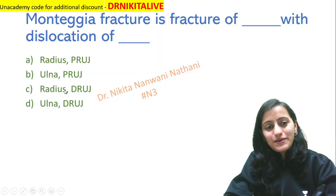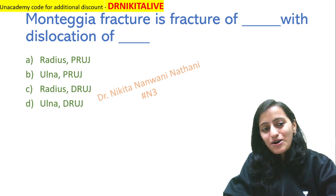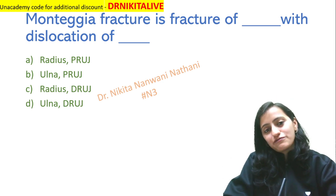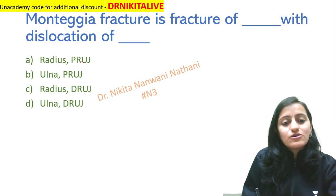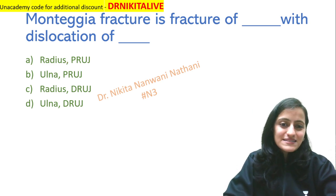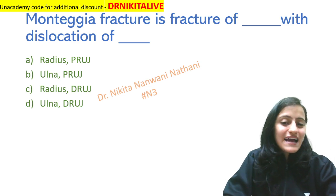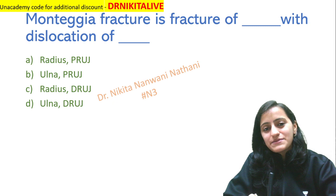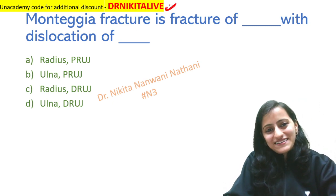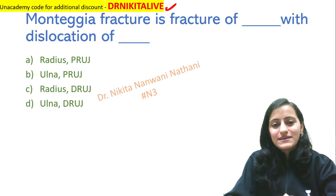So based on this, here's a quick assessment question for you — let me know the answers in the comments. Monteggia fracture is a fracture of which bone with dislocation of which joint — whether it is radius or ulna, and whether it is proximal or distal radio-ulnar joint. I'm hoping to see you all for the free live classes with more such mnemonics, tips, tricks, and concepts on the Unacademy app every day at 5 p.m. The unlock code is Dr. Nikita Life. Thank you so much, goodbye, take care, and keep studying, keep revising, and keep winning.